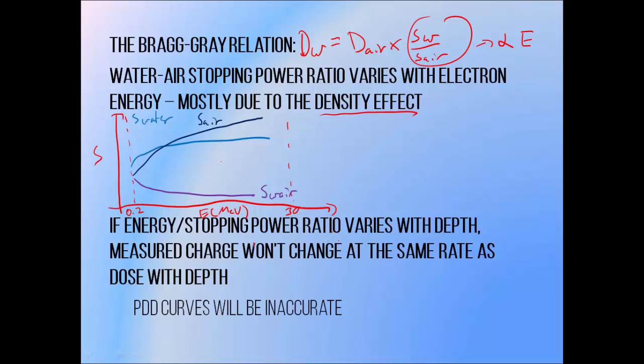This becomes extremely clinically relevant if electron energy within the beam, or therefore the stopping power, varies with depth. This would mean that the rate at which the dose to air varies with depth, dose to air being the quantity that we can measure with an ionization chamber, would change at a different rate to dose to water with depth. This can lead to inaccuracy of percentage depth dose curves measured using ionization chambers.